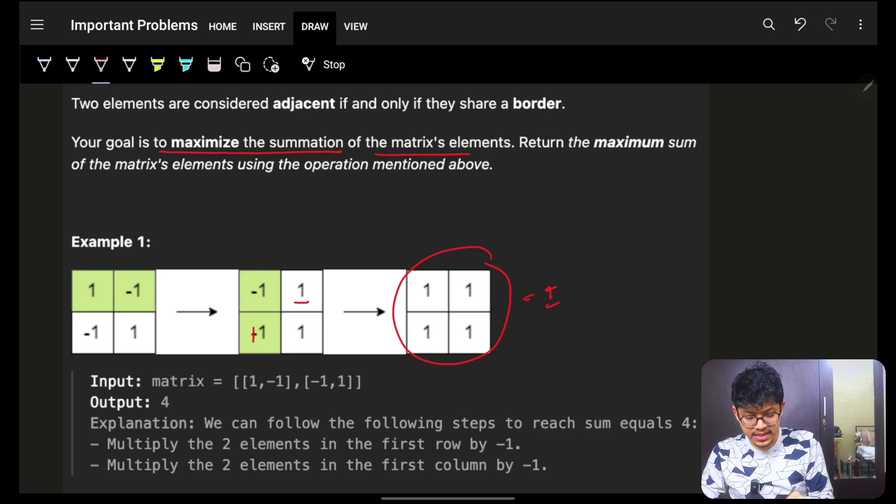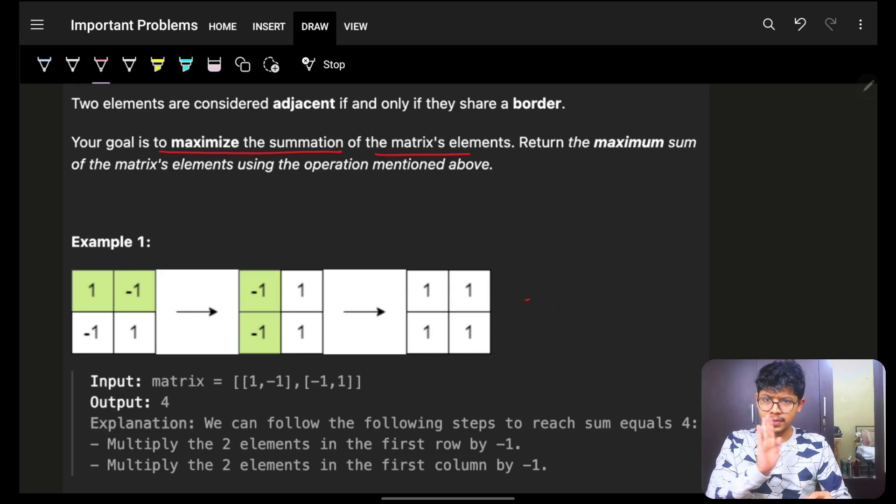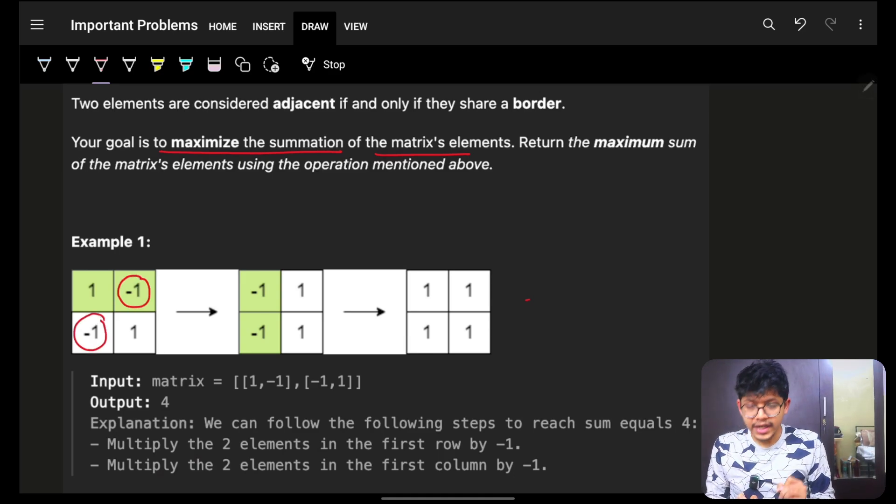Now, as you saw this specific example, did you see, again, before even going to the next example, did you see a small pattern here? That if, in this case, I gave you two negative numbers, somehow, you were able to convert both of them to positive.